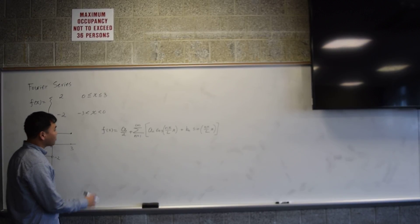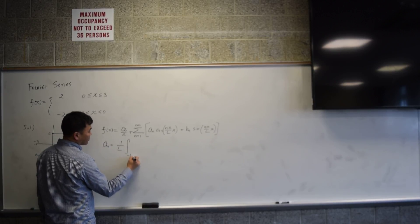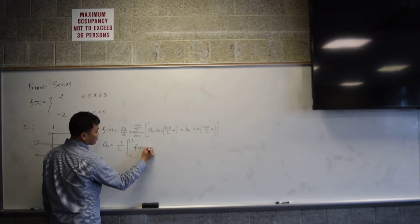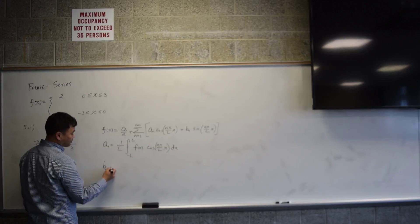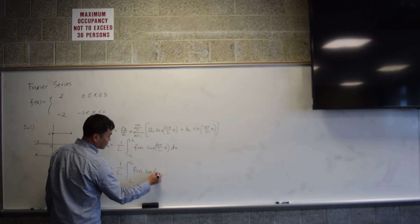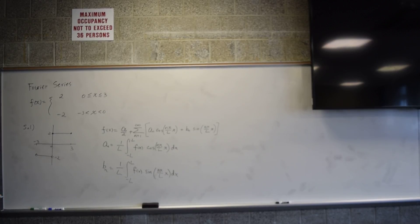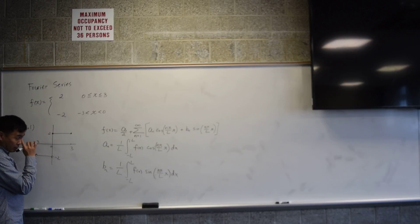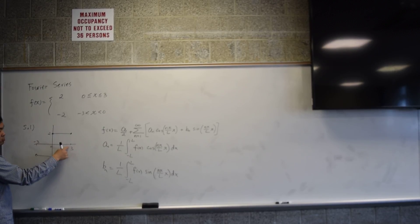Now the coefficients — the formulas for the coefficients are as follows. aₙ is (1/L) times the integral from negative L to L of f(x) times cos(nπ/L · x) dx. L is the number for your interval. This function is defined from negative 3 to 3, so L is 3, because the interval is from negative L to positive L. We will be doing Fourier series only on symmetric domains.